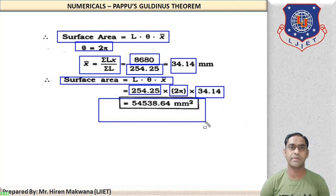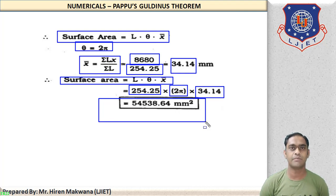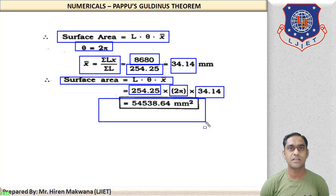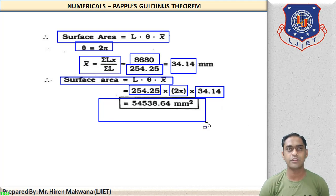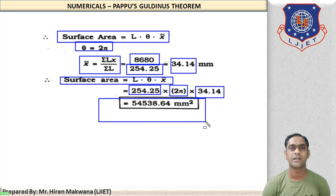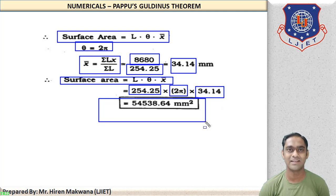These are the basic calculations. We will conclude the chapter here — the chapter on center of gravity is now complete. Do practice such numericals from your textbook. We discussed two numericals today: first for volume and second for area. By doing practice at home, you will master this method. Goodbye students — we will start a new chapter in the next lecture.